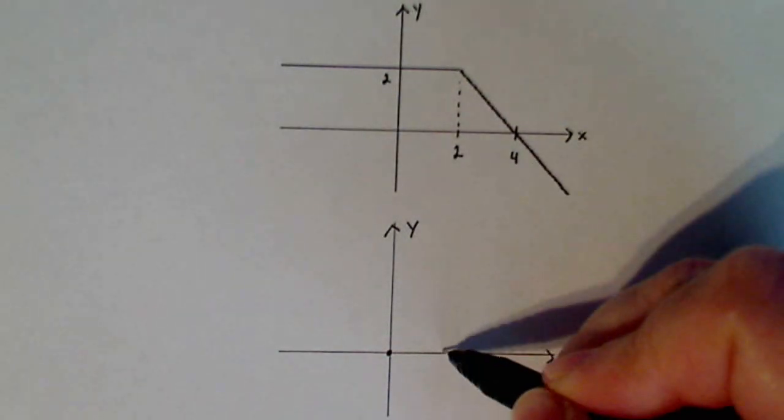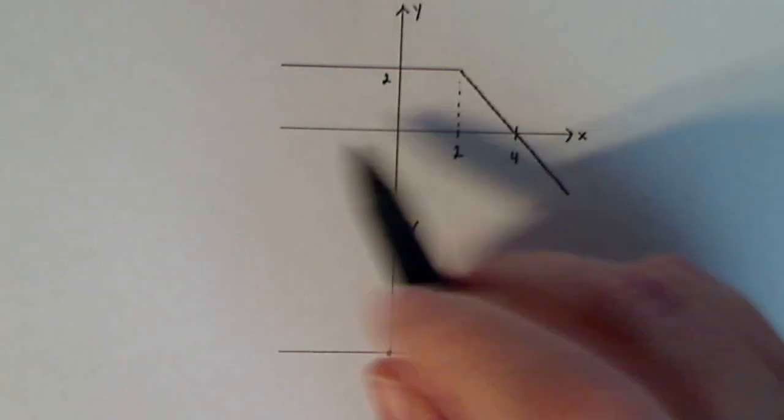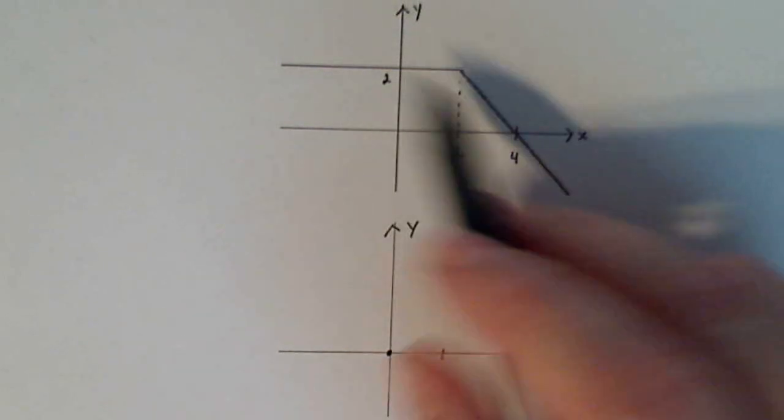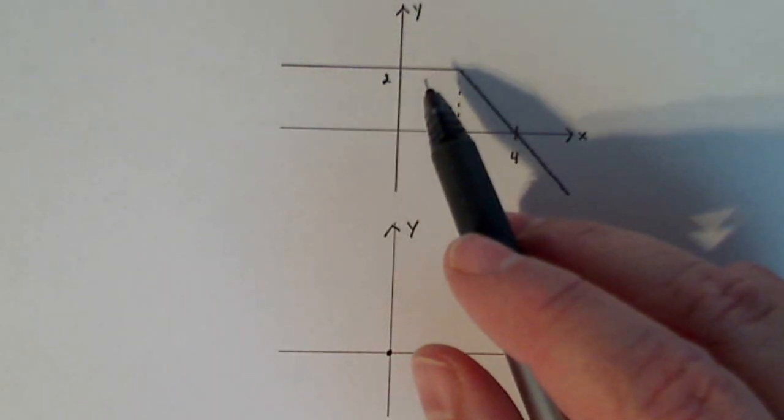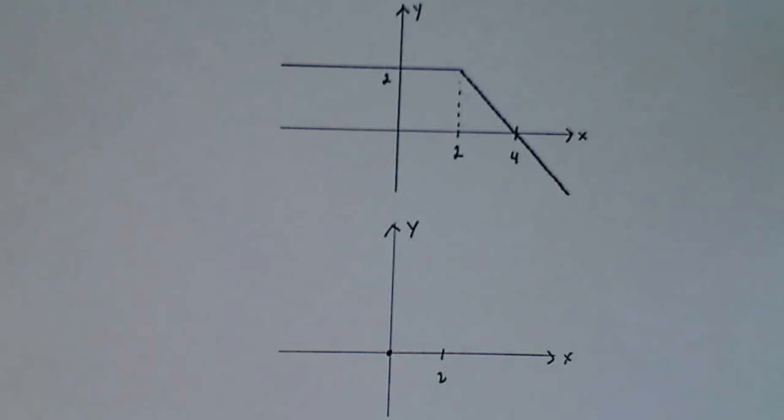Now up until two right here, I can see that my derivative is flat, is constant at two. So a function whose derivative has a constant two, that is a linear function with a slope of two.